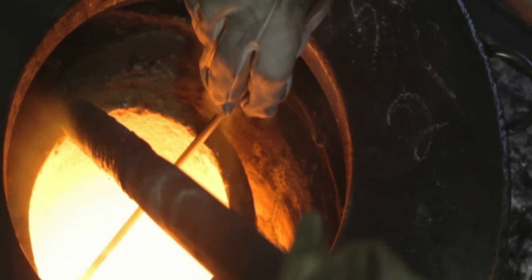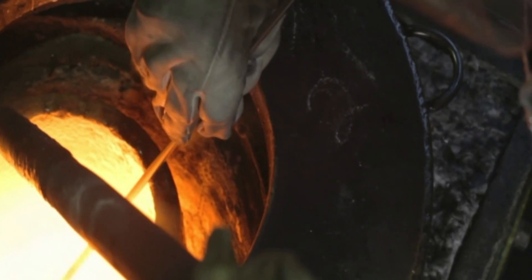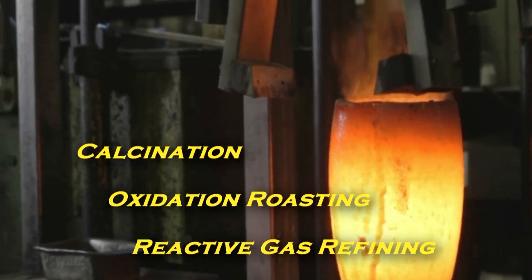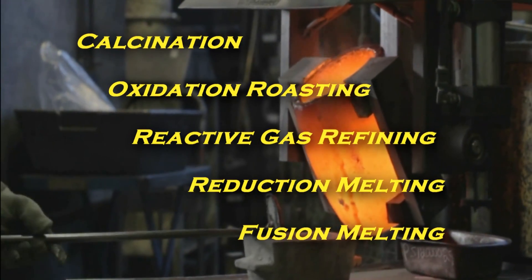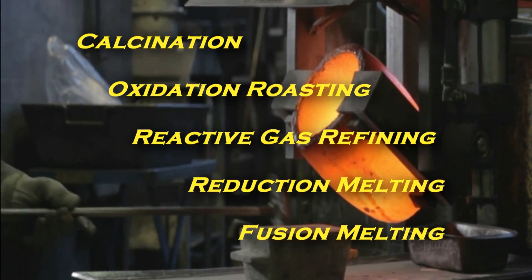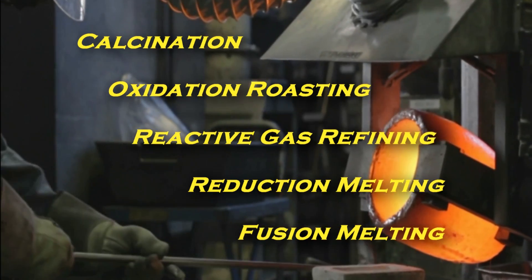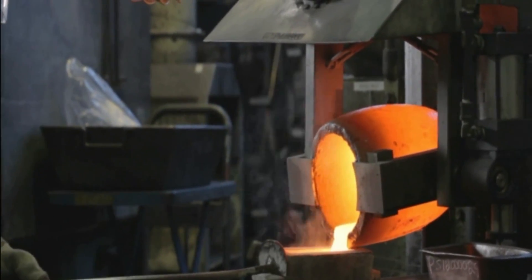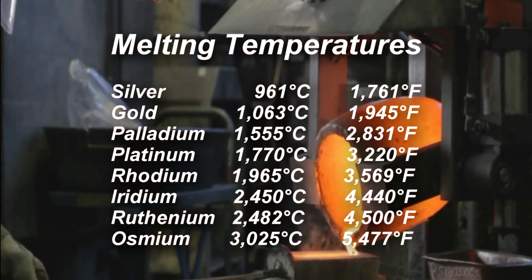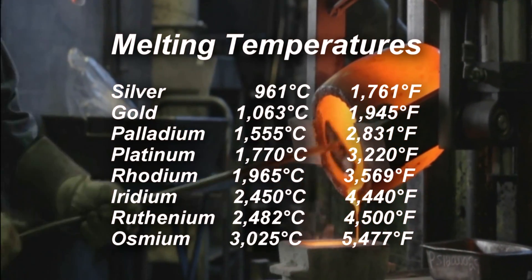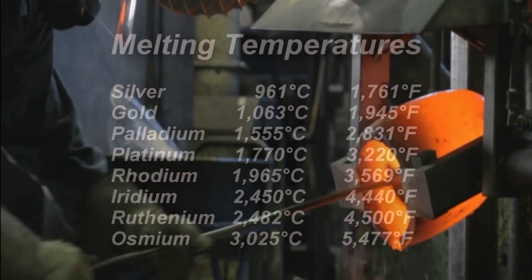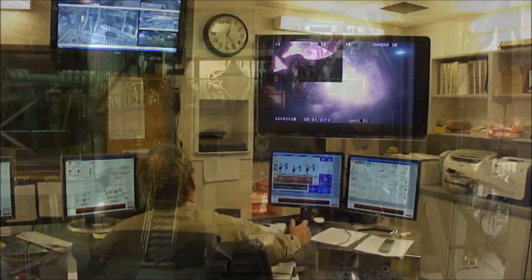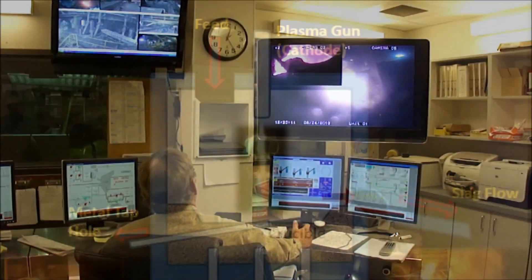Pyrometallurgy involves melting or other thermal treatment to concentrate or extract metals. There are various pyrometallurgy processes ranging from simple burning off of volatiles to complex chemical reactions that can only take place in molten metal or molten salt form. Precious metals each melt at different temperatures, with extremely high melting temperatures among the platinum group metals. In some cases, high temperature furnaces using advanced technologies such as plasma and induction melting are required.